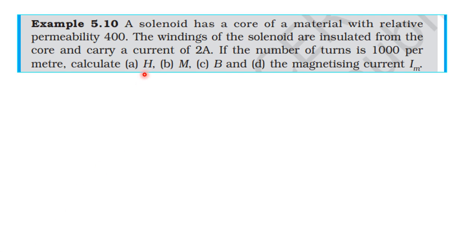From the textbook, topic magnetism, example 5.10: a solenoid has a core of material with relative permeability 400. The windings are insulated from the core and carry a current of 2 amperes. The number of turns is 1000 per meter. Calculate H, M, B, and the magnetizing current.